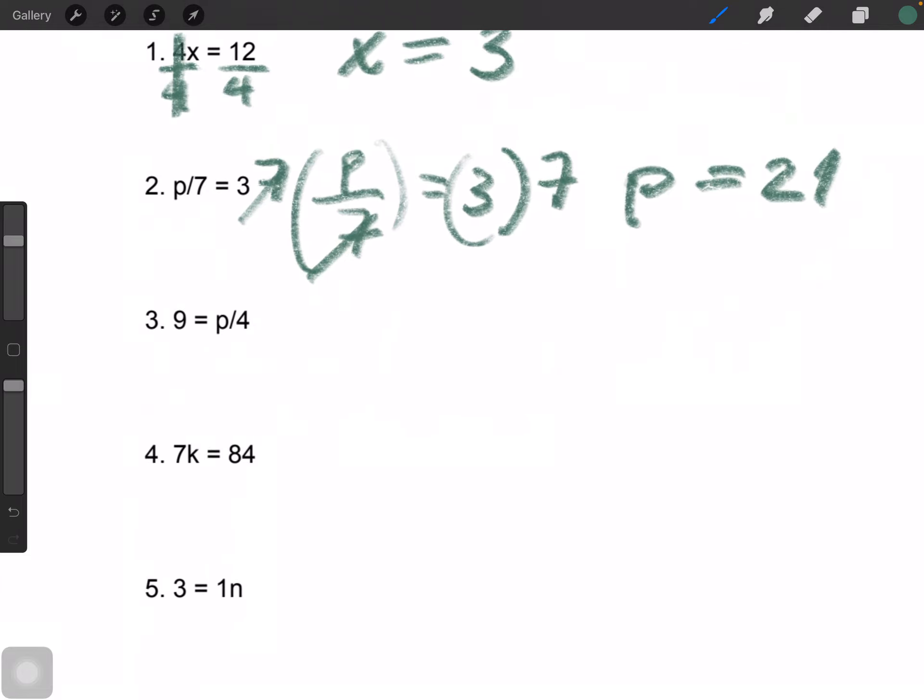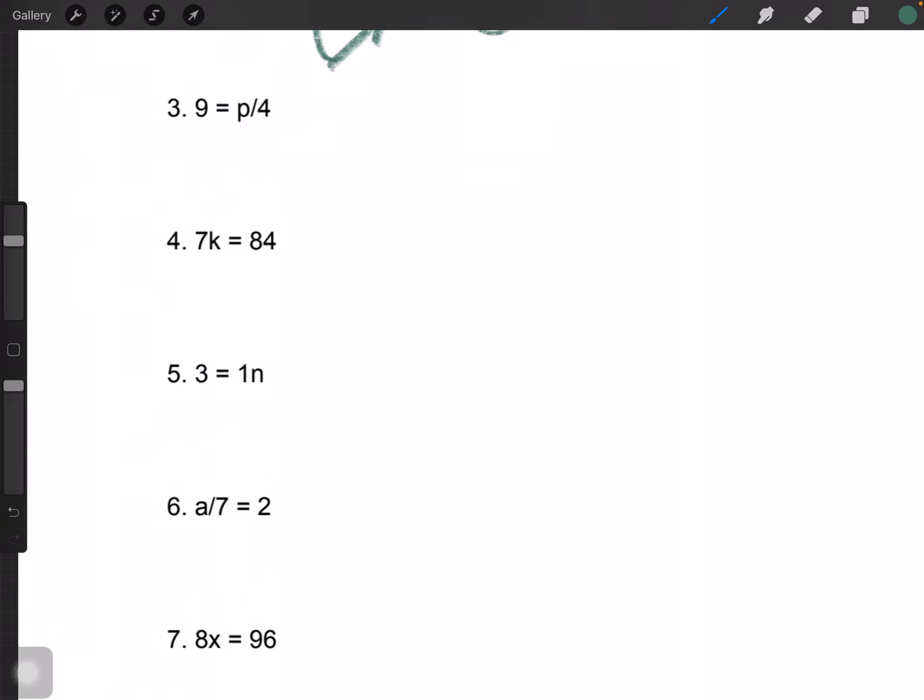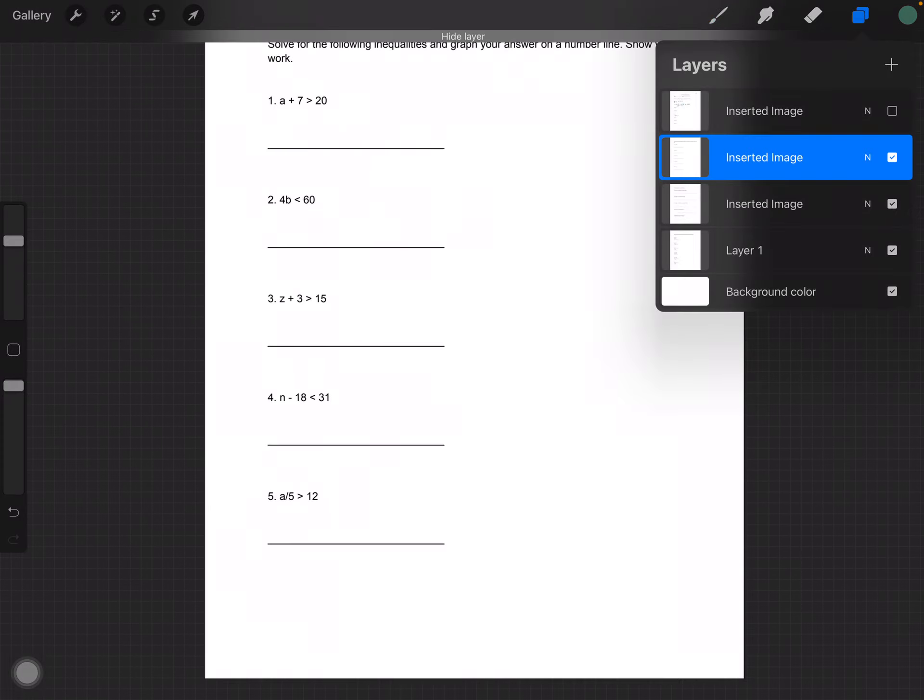Okay, this one is about the same. This one is division, like the first one, so is this one. 1N is just equal to N equals 3, and that gives you your answer. And these are all pretty much the same rules.